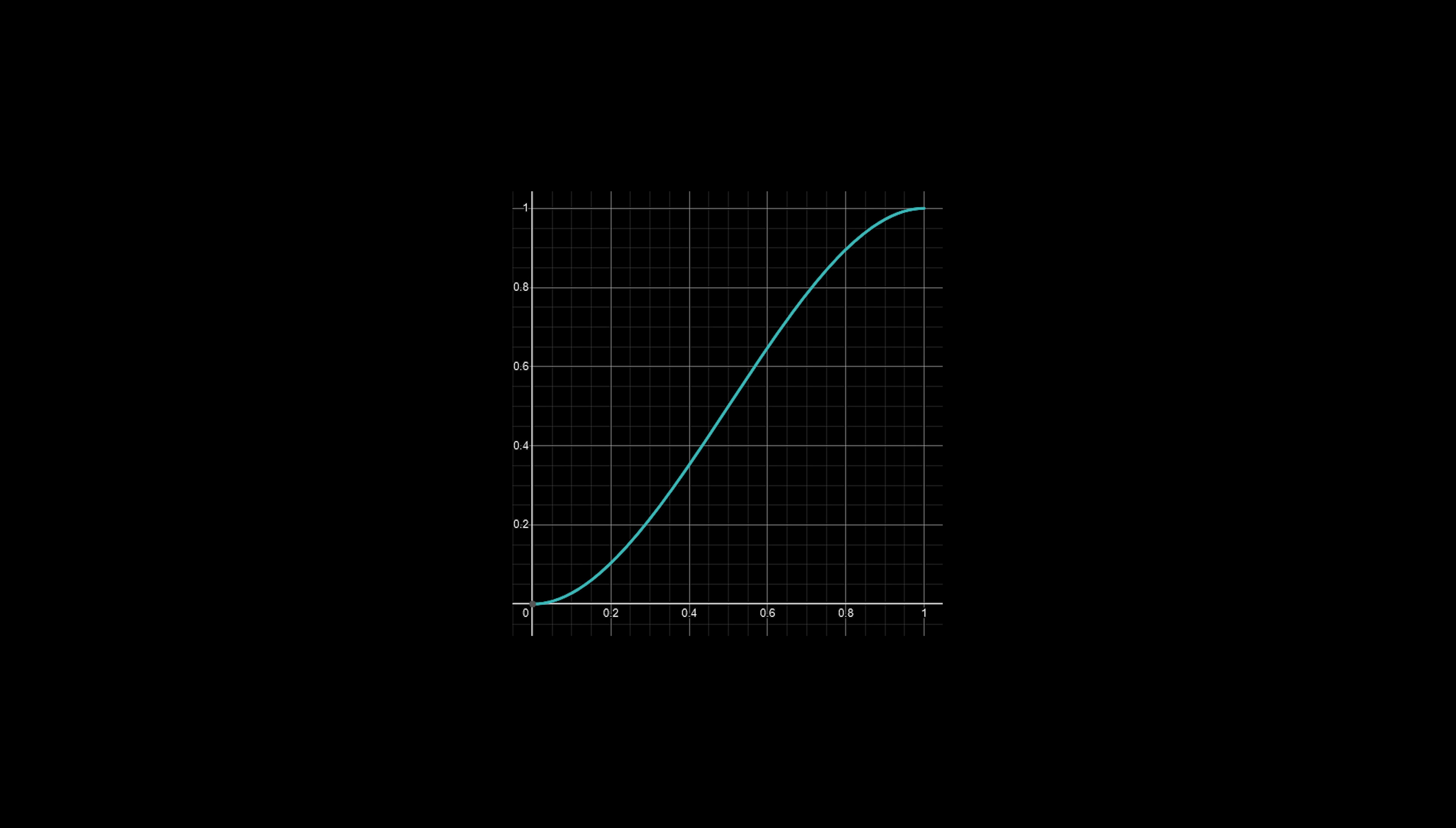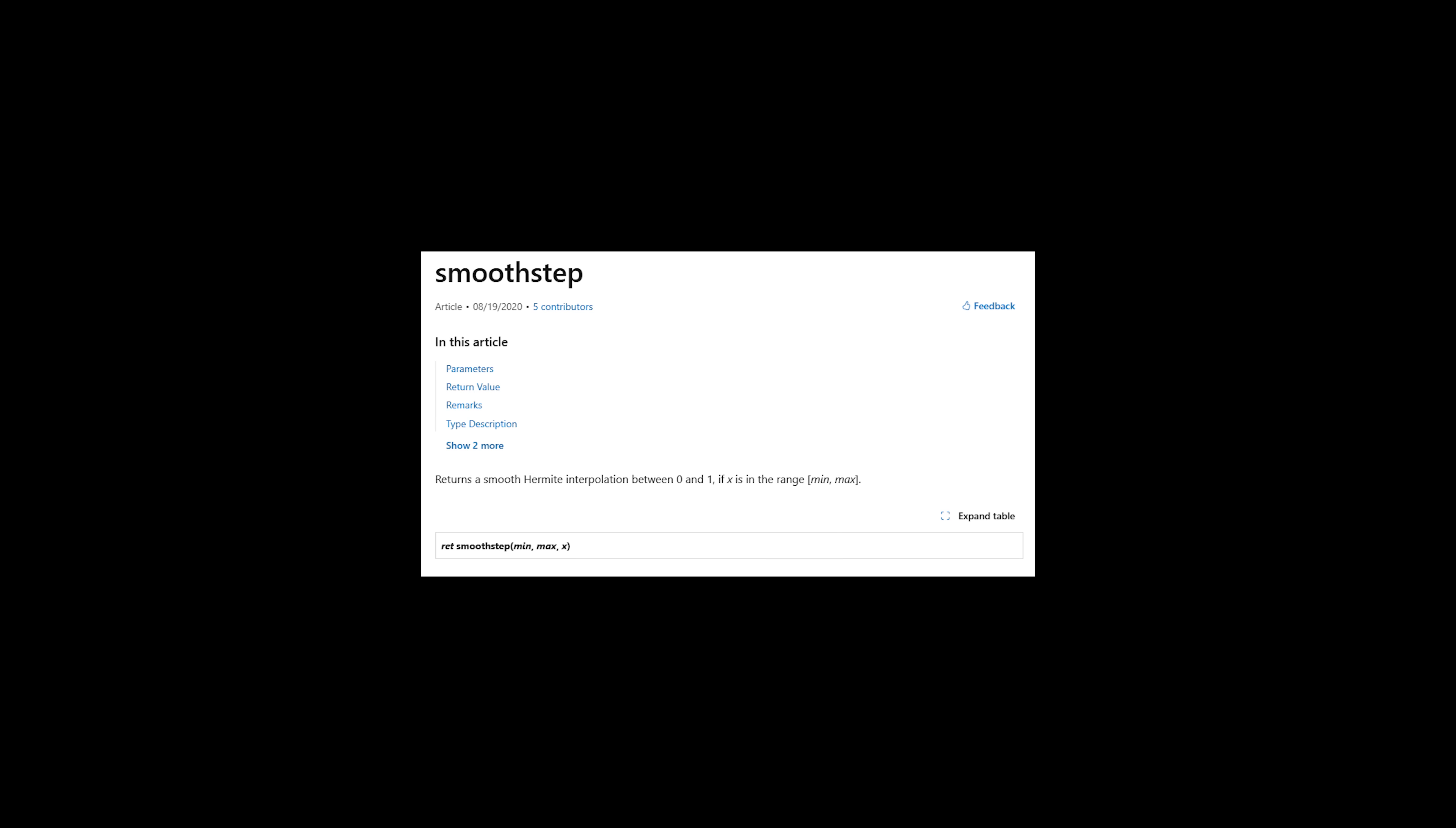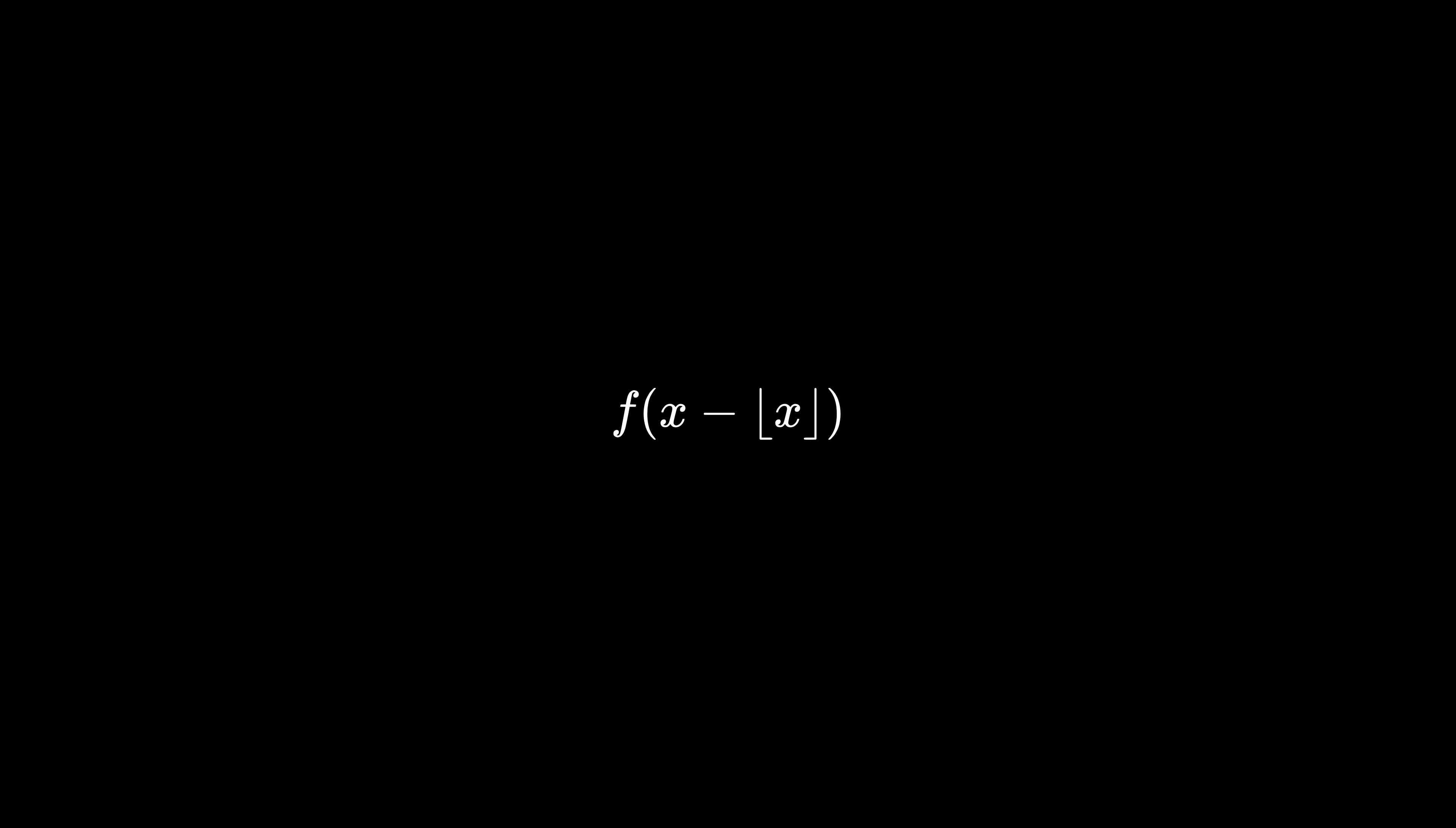It's so popular, shader languages offer it as a built-in function. Applying the smooth step to the interpolation term will make our value noise look more like a wave and less like a jagged mess. This finishes our value noise implementation, but one-dimensional noise isn't very useful.